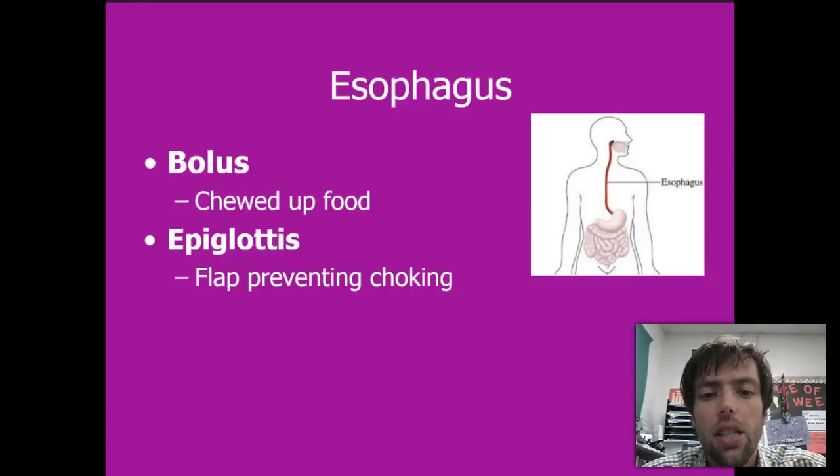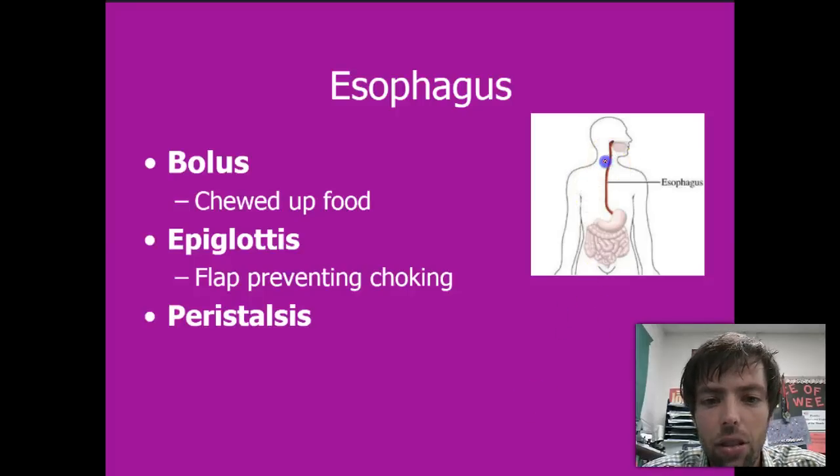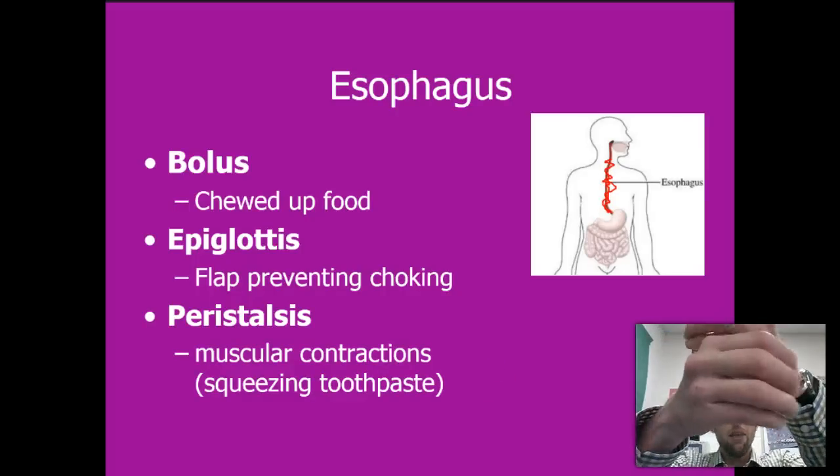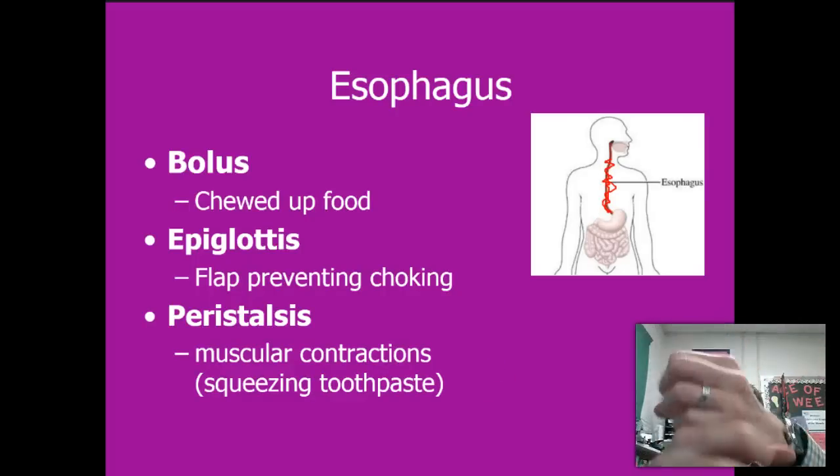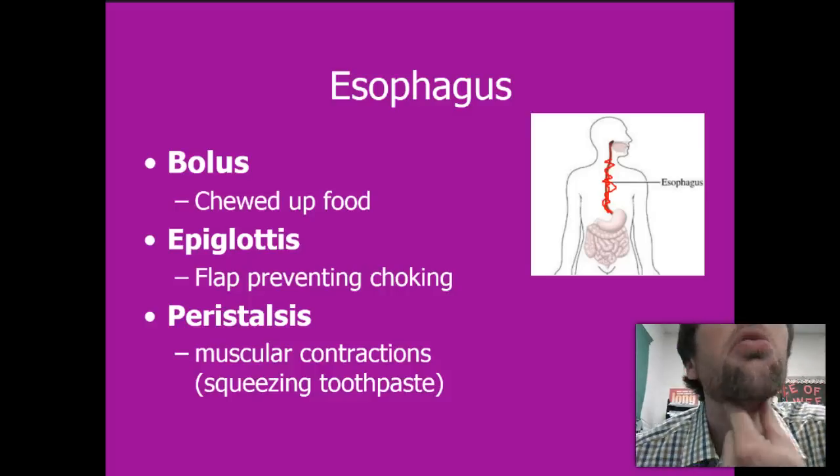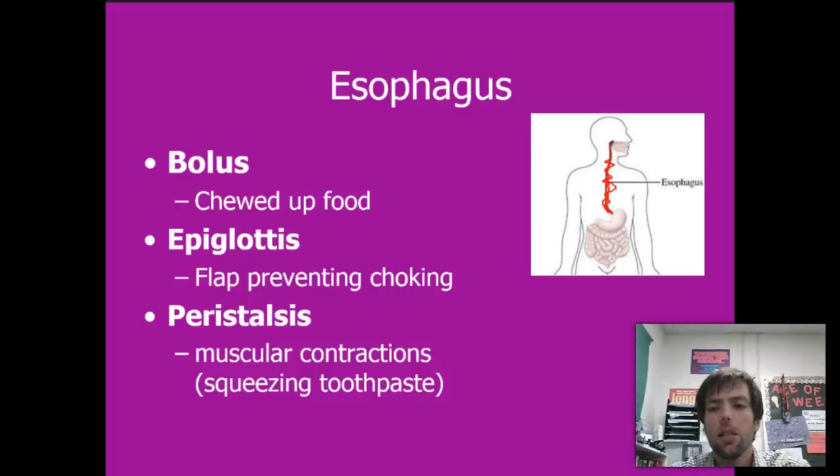Alright. Peristalsis is a muscular contraction of how food moves down this esophagus right here. And what it's like, it's sort of like squeezing toothpaste. So it's like, here's the top and it's like squeeze, squeeze, squeeze, squeeze. Your esophagus is actually a muscle that squeezes food, squeezes food down right there. That's pretty fun.